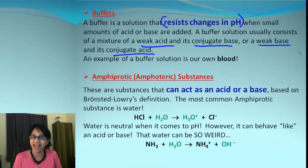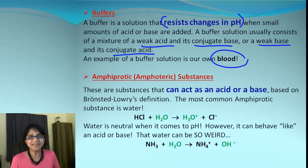One of the common examples of buffer solution is our own blood, and pH is more or less maintained the same. Here is one new term: amphoteric or amphiprotic substances. What are those?